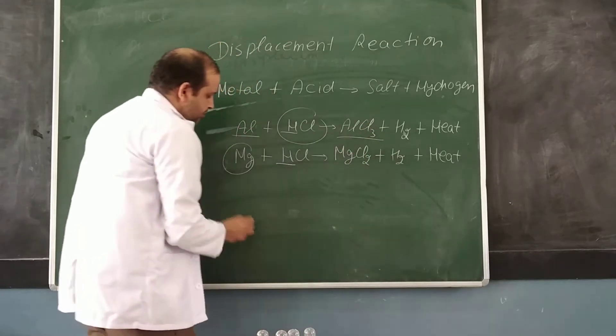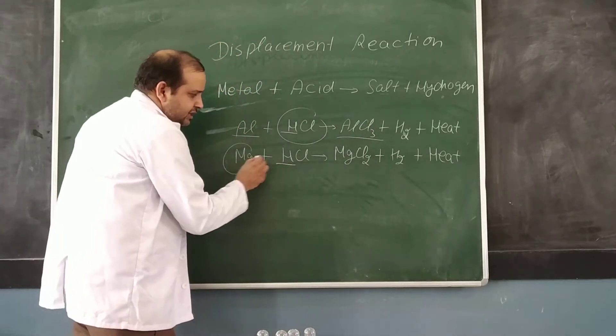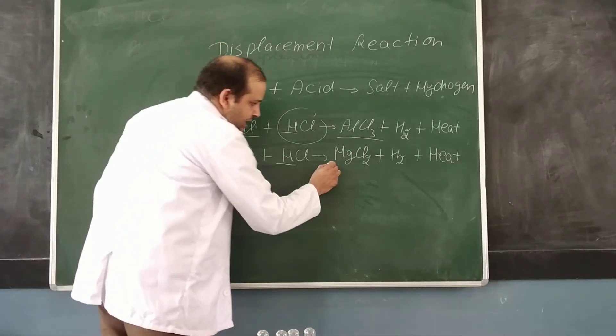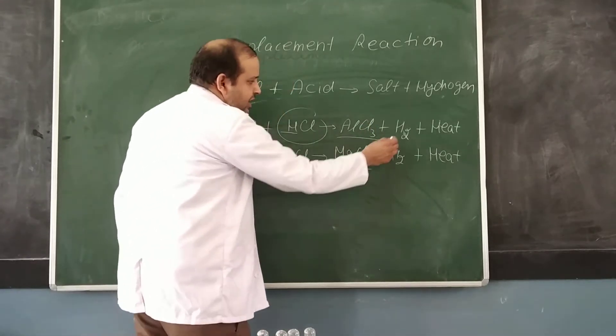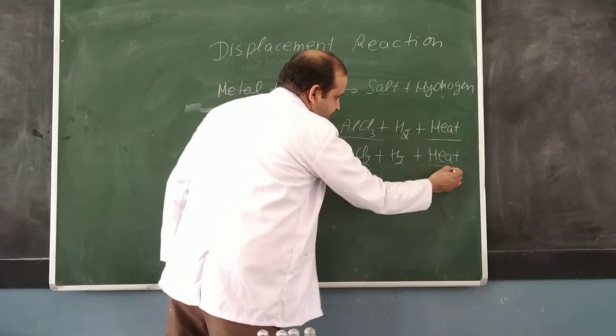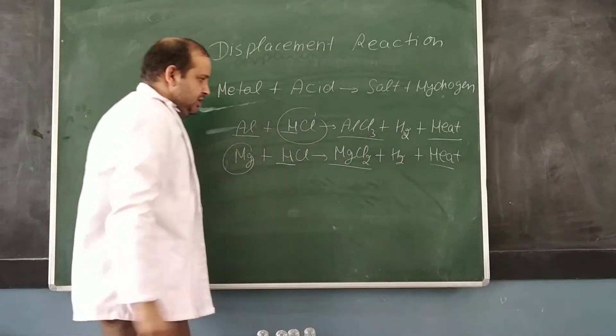AlCl3 will form. Magnesium will take the place of hydrogen and MgCl2 will form. Hydrogen gas is released and heat is produced.